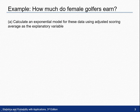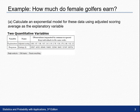In Part A we're asked to calculate an exponential model for these data using adjusted scoring average as the explanatory variable. Open up the two quantitative variables applet. Fill in your explanatory variable along with the name — the adjusted scoring average as we were told — and the response variable along with the earnings. Type in each of the values in consecutive order, making sure that the earnings pair up with each of those values, doing everything in order.